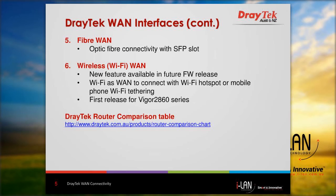On the fiber WAN, routers like the Vigor 3900 support fiber connection with SFP — small form-factor pluggable — modules, and connect with gigabit Ethernet fiber optic cable.